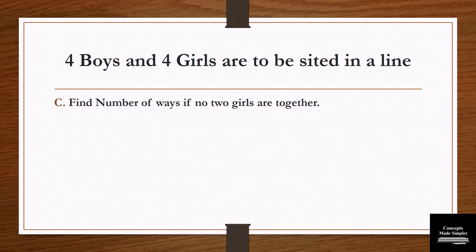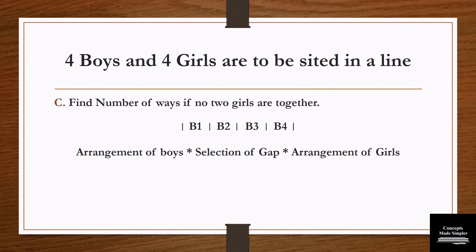The next question: find the number of ways if no two girls are together. First, write all the boys, then count the gaps — there are 5 gaps. Solution: arrangement of boys × selection of gap × arrangement of girls. Final solution: 4 factorial × 5C4 (select 4 gaps out of 5) × 4 factorial (arrangement of 4 girls).